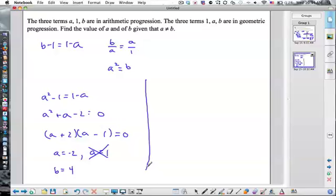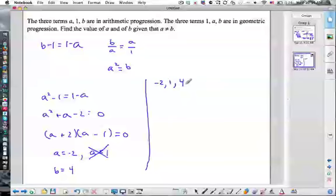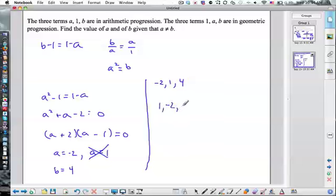So let's just check to make sure that these make sense. So in the arithmetic, we have negative 2, 1, and 4. So that means I add 3 every time as an arithmetic. And as a geometric, I think it works. The geometric will be 1, negative 2, and 4. So we have multiply by negative 2. 1 by negative 2, we get negative 2. Multiply by negative 2 again, we get 4. So there you go. It works.